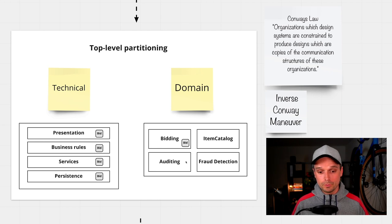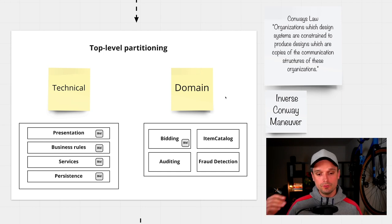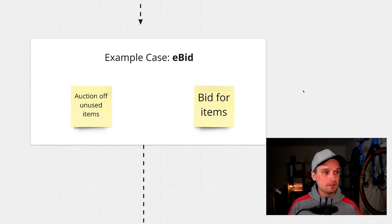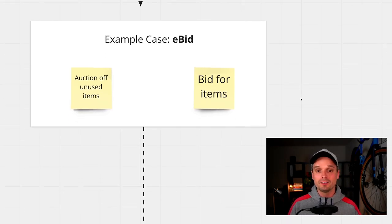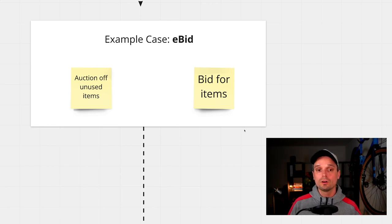That's been a lot of theory. Let's get into a case study to look at these different steps and apply them. Our case study is called EBIT — very close to something you might know from everyday life. You can auction off unused items, and you can bid for those items. It's basically an auctioning website for people with unused items.